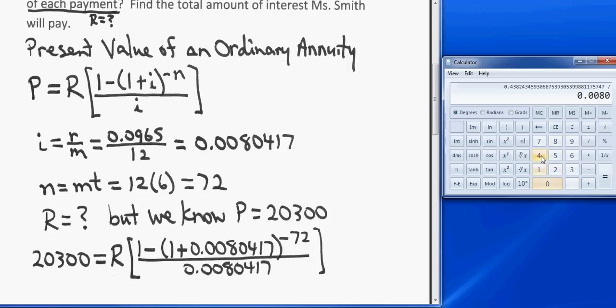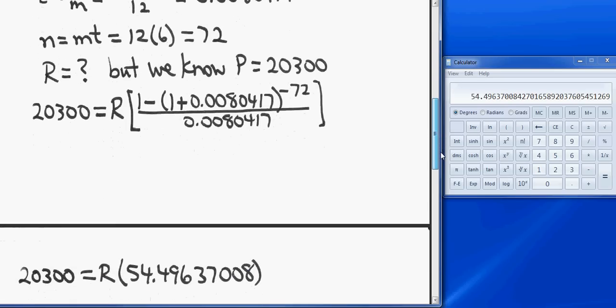In the brackets here, I need to divide that by 0.00804167, equals. That's the entire quantity in brackets. Now what's going to happen with that number is, in order to solve for R, that 54.49 etc. is going to be divided—you're going to divide both sides by that to find out what the periodic payment is.